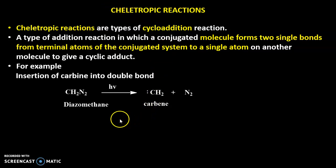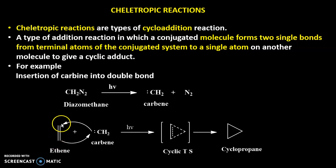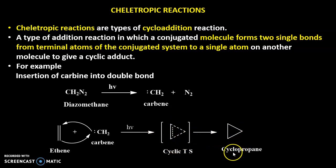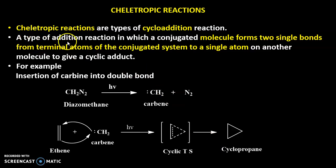Consider CH₂=CH₂, this is ethene or ethylene. When we treat this ethene with carbene, there is a formation of cyclopropane. See what is happening: this bond is shifting here, these electrons are shifting here, so this cyclic transition state is formed and there is a formation of cyclopropane. The insertion of carbene is taking place into this double bond. Now you will understand the definition — the molecule forms two single sigma bonds.